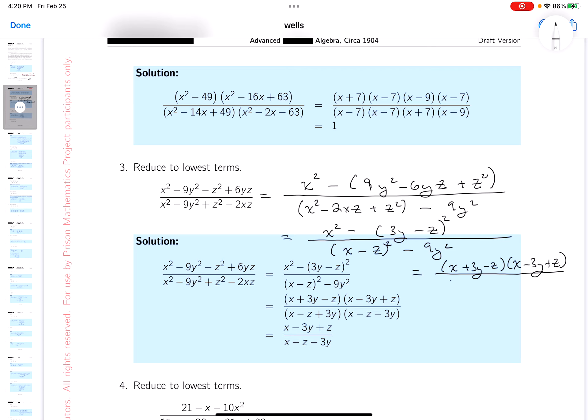What goes on bottom? A little bit easier. Here, x minus z minus 3y, x minus z plus 3y.